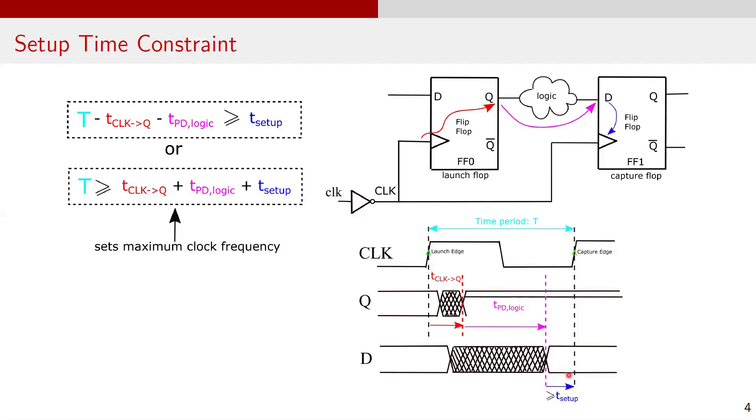Now let's focus over here. If t setup time is the setup time of FF1, then the condition for the correct data capture is that the data arriving at the input of FF1 must be stable at least t setup time before the capture clock edge. In summary, for successful data capture, the total delay from FF0 to FF1, which includes clock-to-Q delay and propagation delay, must satisfy the setup time requirement of FF1 relative to the clock period. Putting it all together, the condition can be written as t minus t clock-to-Q minus t PD logic must be greater than t setup time, which is shown over here, or equivalently t, that is the time period of clock, must be greater than t clock-to-Q plus t PD logic plus t setup. This constraint defines the minimum clock period required for correct operation of sequential circuit. Consequently, it determines the maximum clock frequency at which the design can operate reliably.